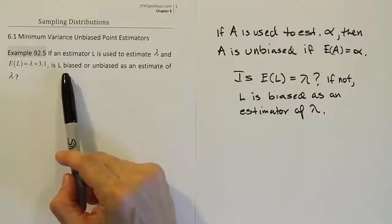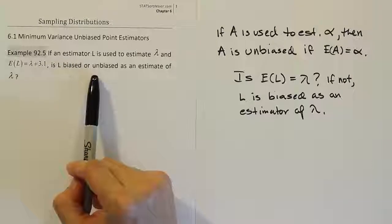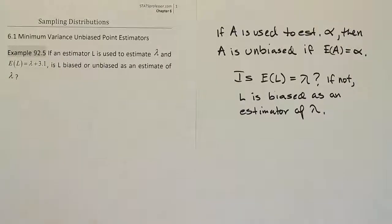Just remember B for biased, B for bad. That's a bad quality. We want our estimators to be unbiased ultimately.